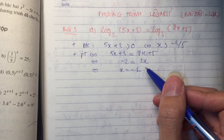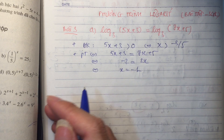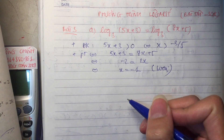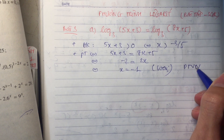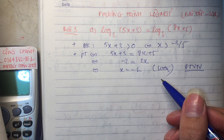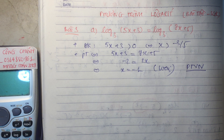Âm 1 không thể lớn hơn âm 3 phần 5 được. Âm 3 phần 5 thì mới có âm không phải mấy thôi, còn âm 1 thì nhỏ hơn. Cái này loại. Vậy phương trình này vô nghiệm. So sánh số âm thì ngược lại so với so sánh số dương. Do 1 lớn hơn 3 phần 5, nên âm 1 phải bé hơn âm 3 phần 5. Bé hơn nên sẽ bị loại rồi.